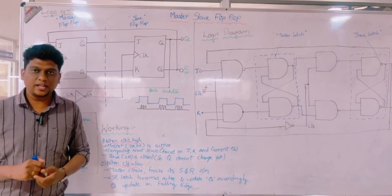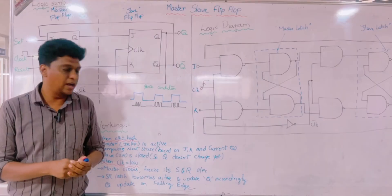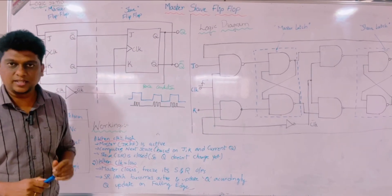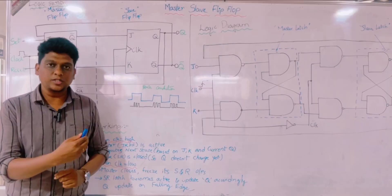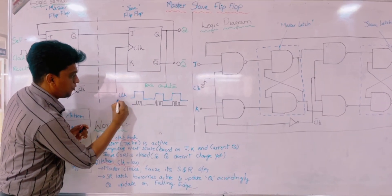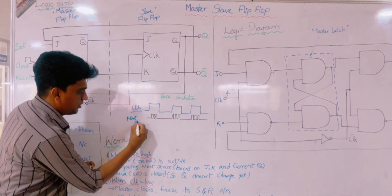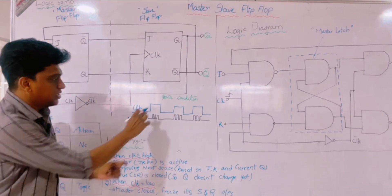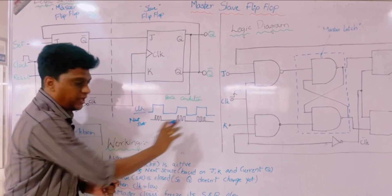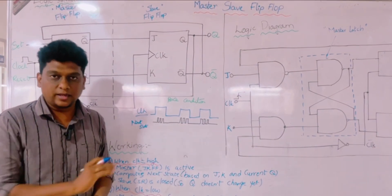Welcome to this video on the master-slave JK flip-flop. The drawback of the JK flip-flop is that when J and K are both equal to 1, we get a racing condition. Whenever the input is J=K=1 for a single clock pulse, we are getting the next state with certain variations, meaning many frequency variations occur within a single clock pulse. This condition is termed the racing condition.